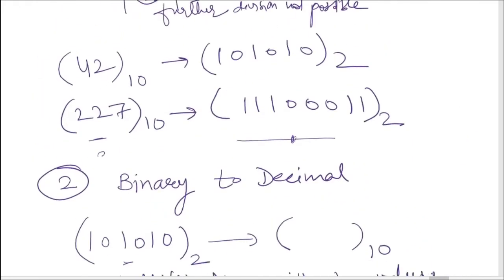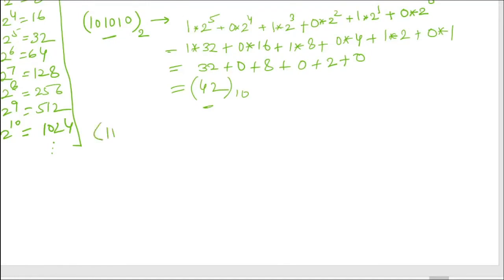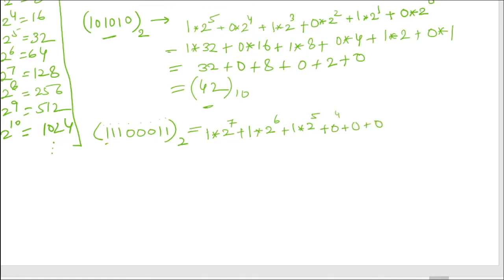Let us convert one more number: 11100011 in binary. First count the bits: 1,2,3,4,5,6,7,8 — 8 bits total. So the highest power will be 7. The expansion is: 1×2⁷ + 1×2⁶ + 1×2⁵ + 0×2⁴ + 0×2³ + 0×2² + 1×2¹.